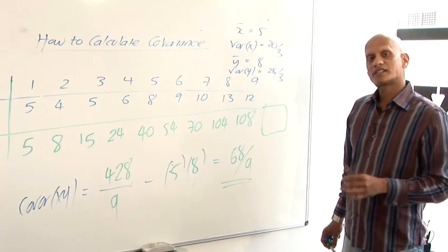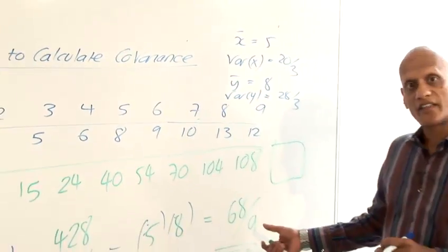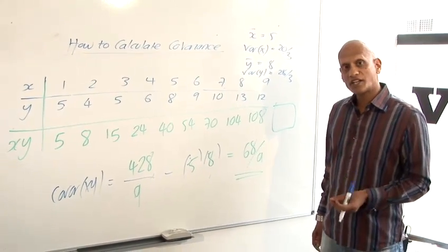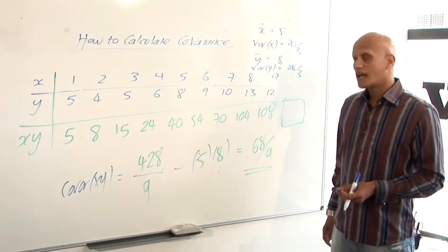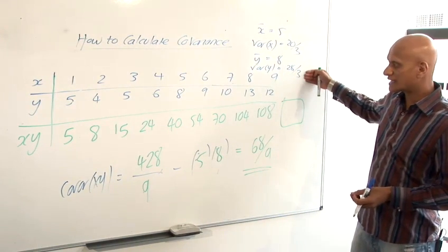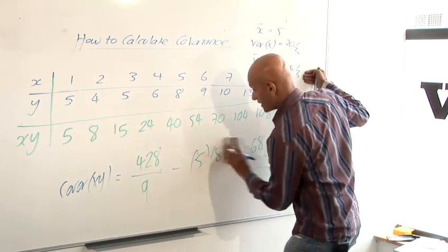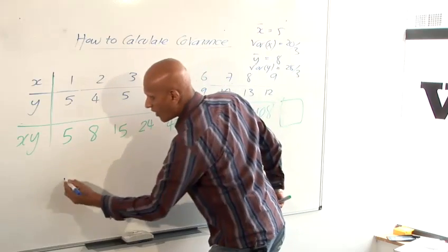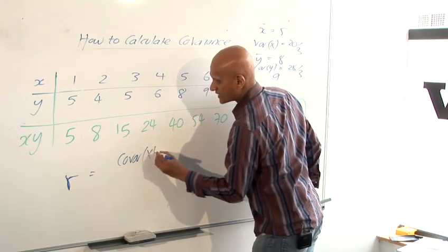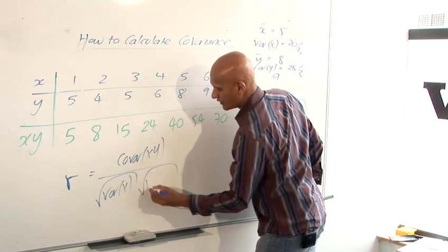Now that we've done that we can go a step further. The covariance tells us how they vary together but a more precise measurement of the correlation between them is called the correlation coefficient. Now because we've worked out the covariance of XY and we've worked out the variance of X and we've worked out the variance of Y that means we can quite easily work out the correlation coefficient. The correlation coefficient is called R and it's equal to covariance XY divided by the square root of the variance of X times the square root of the variance of Y.